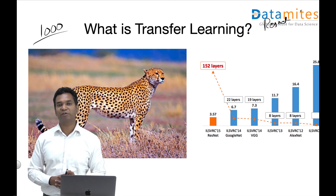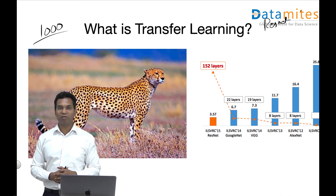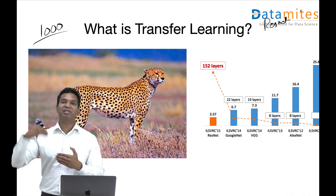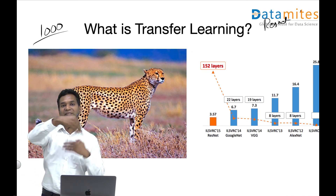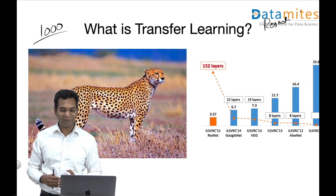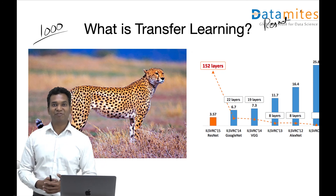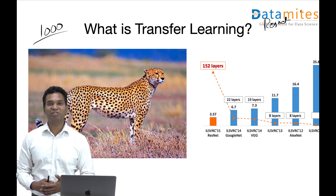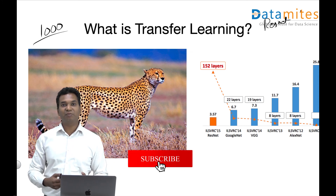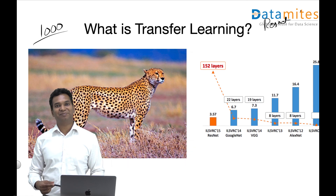To summarize, transfer learning is all about training an algorithm by using the prior knowledge gained from training on other related tasks. Thank you very much for watching. If you like the channel, please subscribe and click the notification bell. I'll see you in the next video.